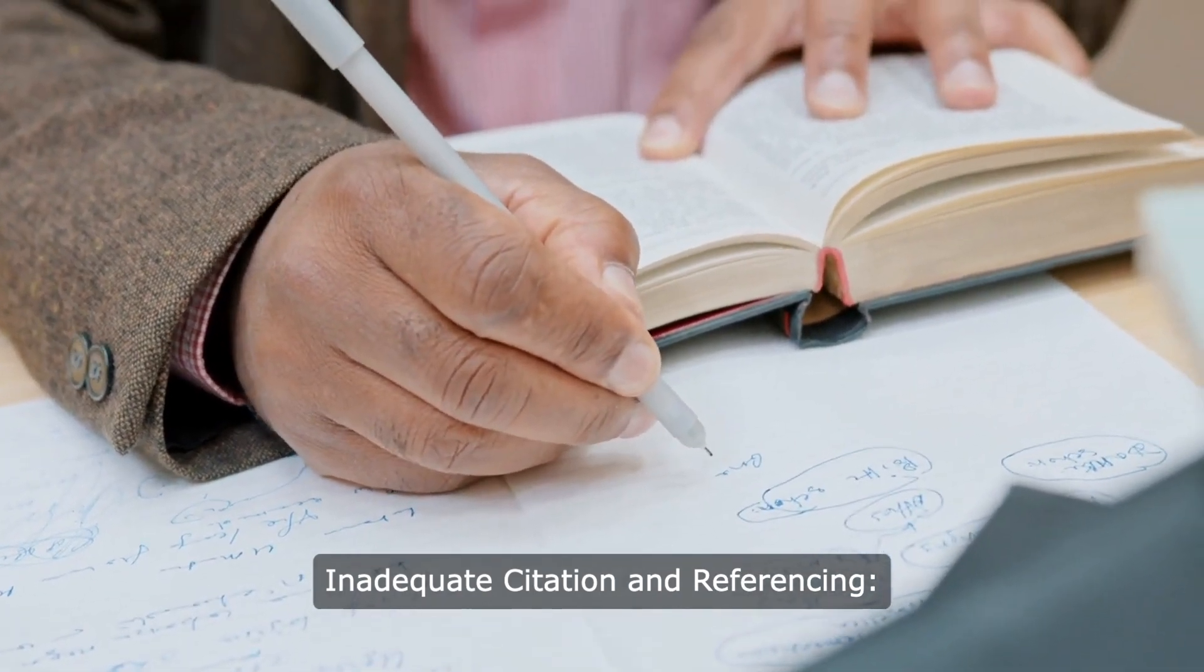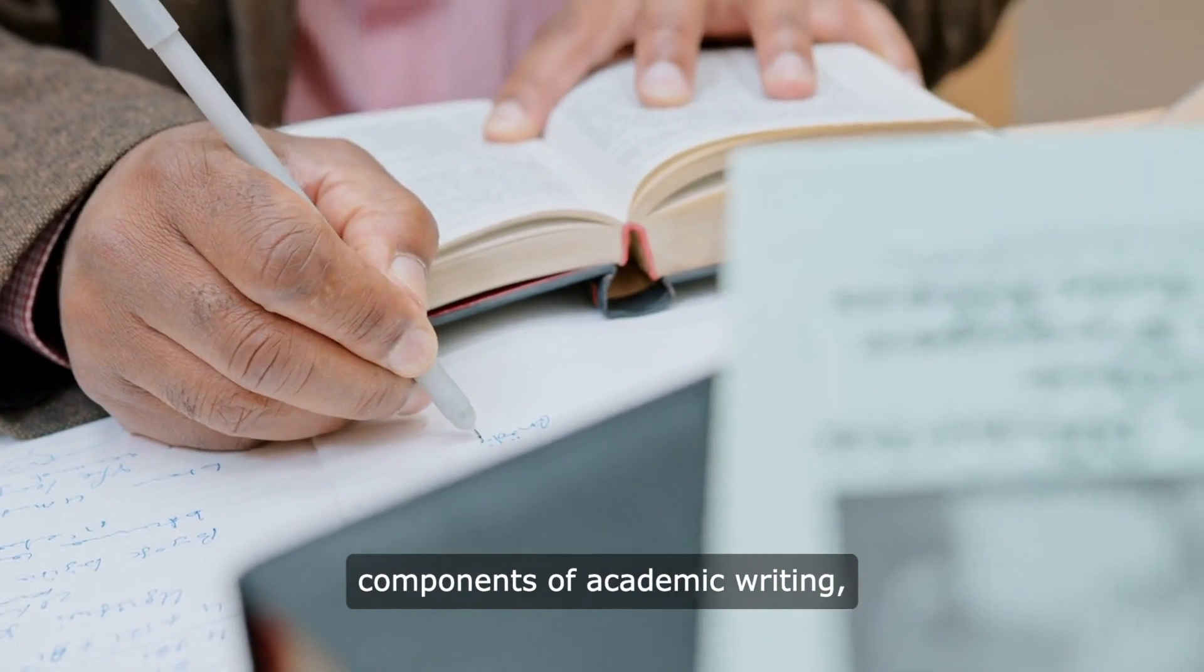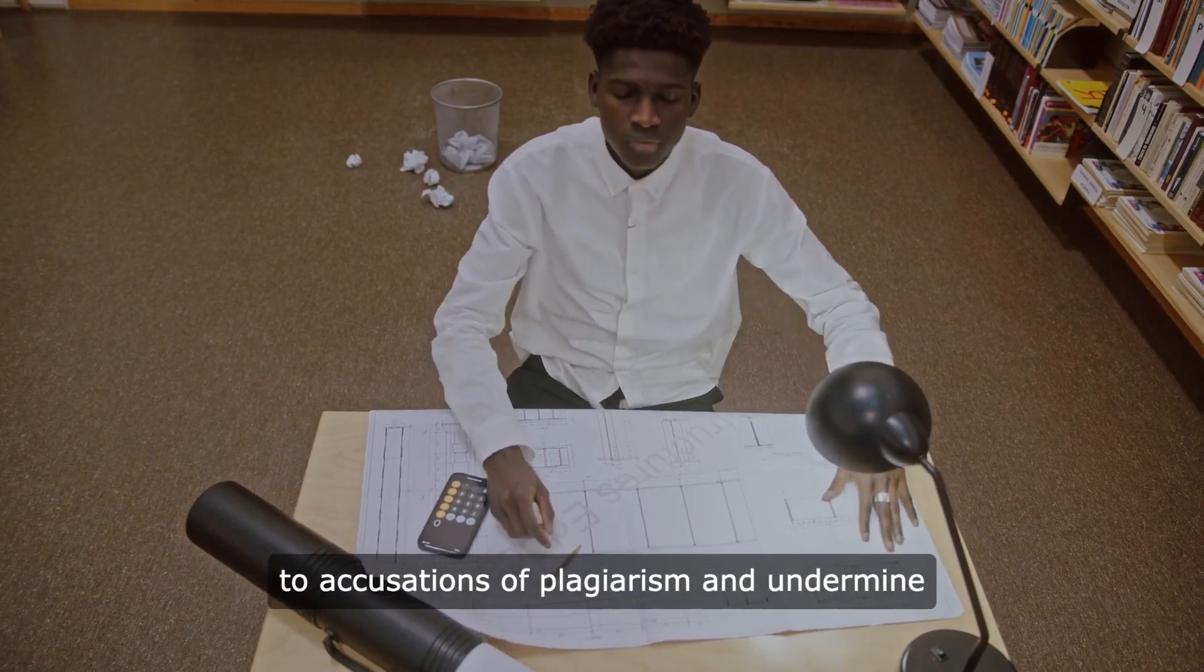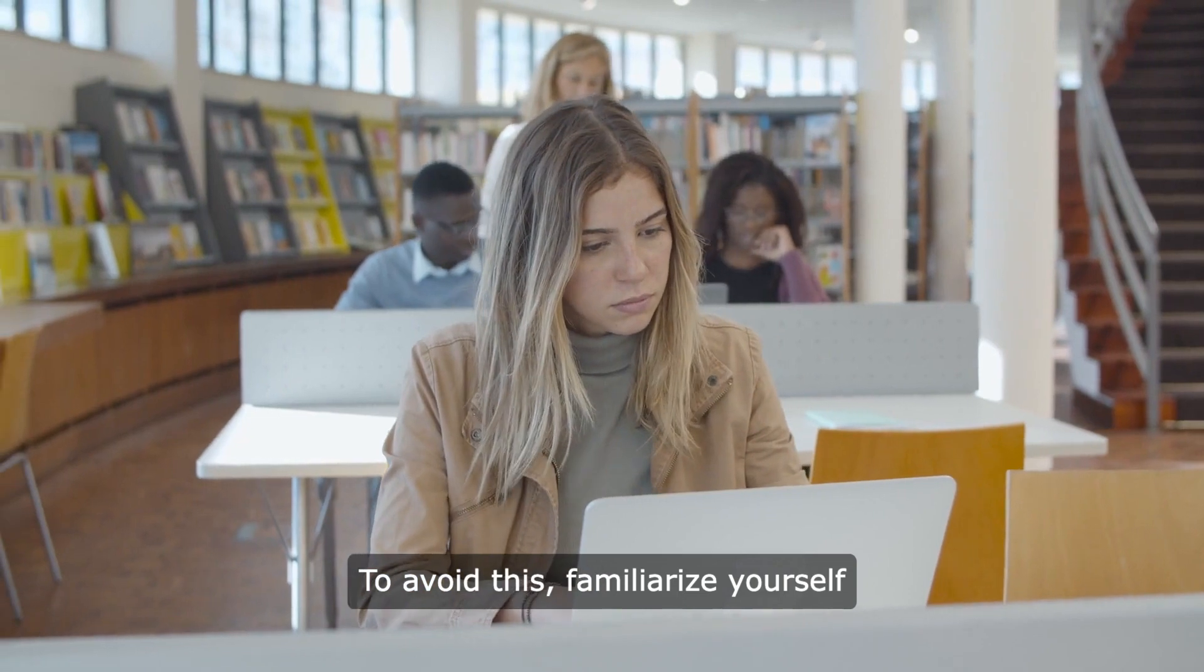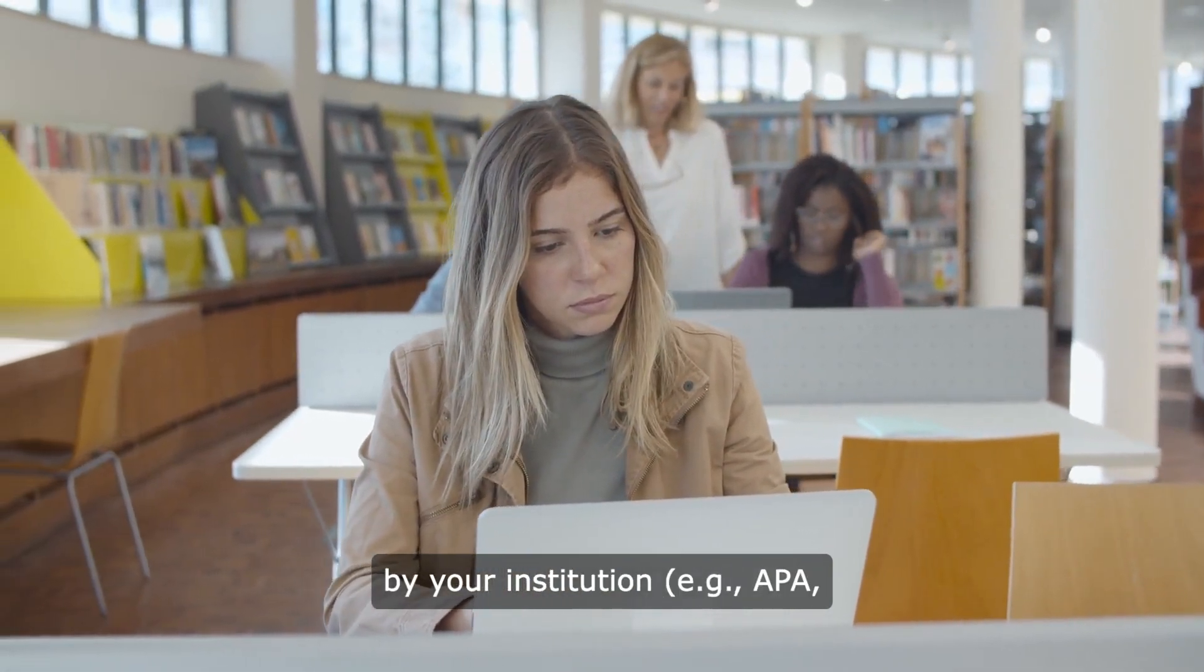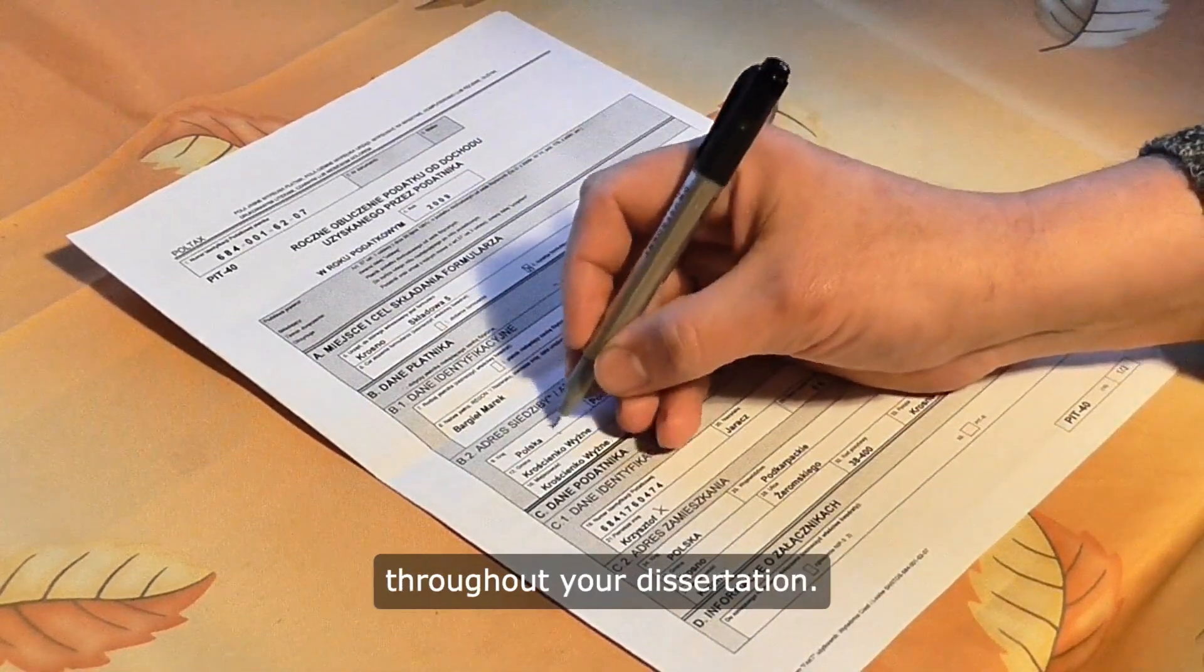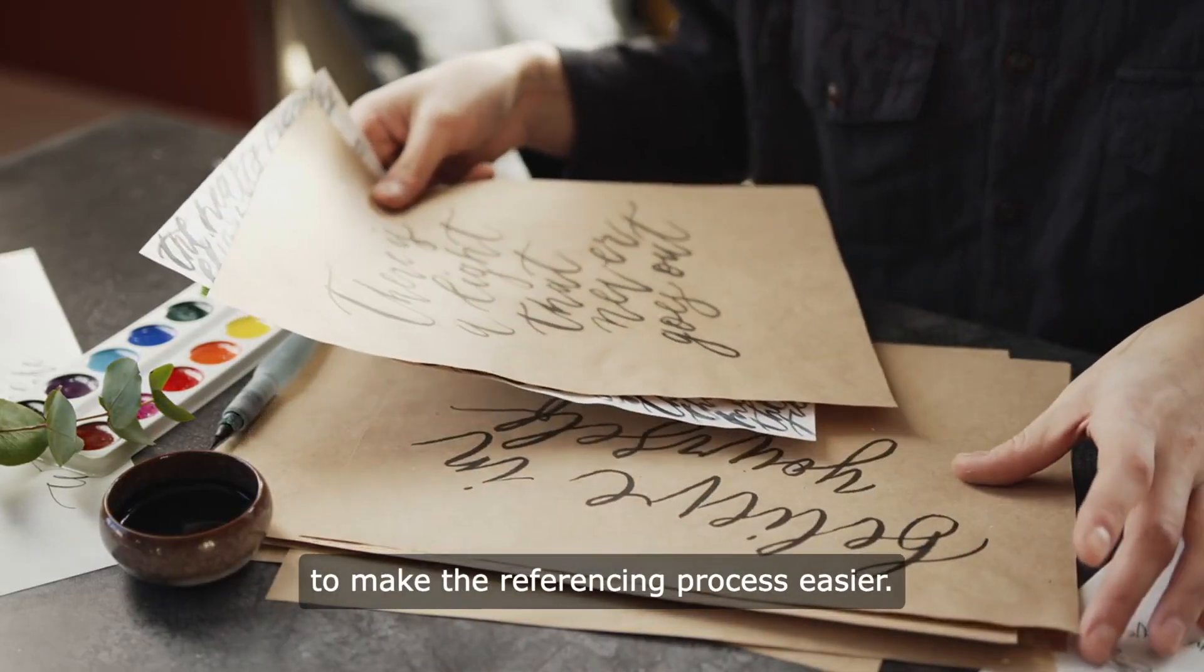Inadequate citation and referencing. Proper citation and referencing are essential components of academic writing, but some students overlook their importance. Failure to cite sources correctly can lead to accusations of plagiarism and undermine the credibility of your dissertation. To avoid this, familiarize yourself with the citation style required by your institution (e.g., APA, MLA, Chicago), and ensure that you cite all sources accurately and consistently throughout your dissertation. Keep detailed records of your sources to make the referencing process easier.